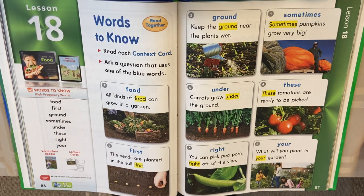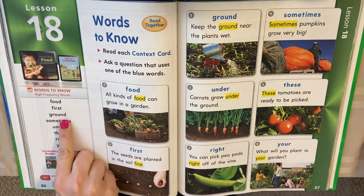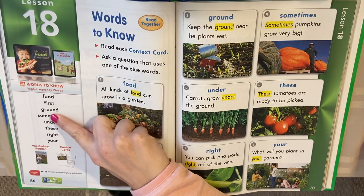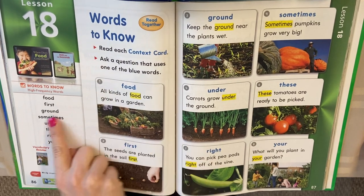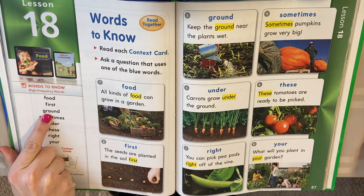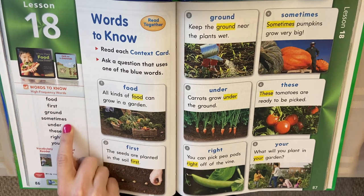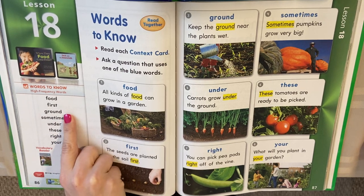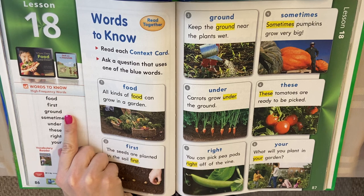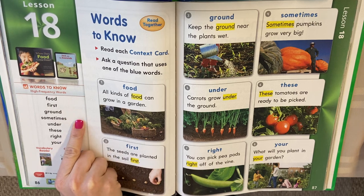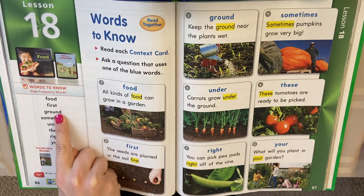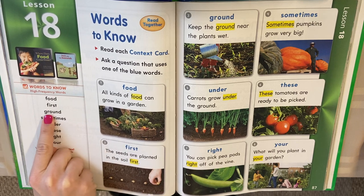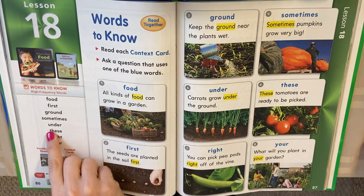"Sometimes" can be broken up into two words. We have "some" and then "times." And look, there's our ending S — we talked about the suffix. So if you cover up that S, you see the word "time." Sometimes, sometimes.